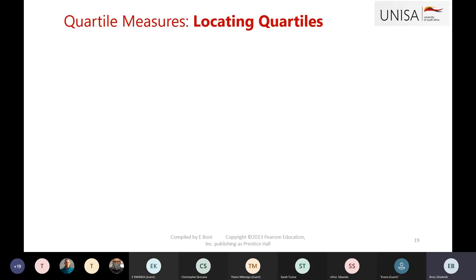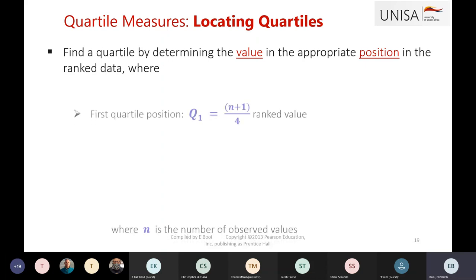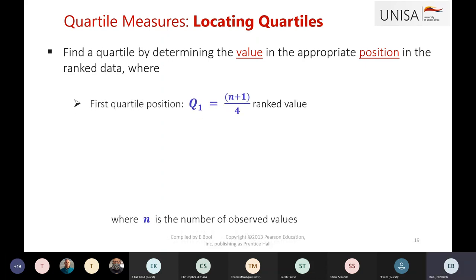To find the quartiles, we use the position, like we did with the median — but it's different. To find the position of quartile 1, we use n plus 1 divided by 4, because there are 4 quartiles. Remember also with the quartiles, you need to order your data from lowest to highest, where n is your sample size.